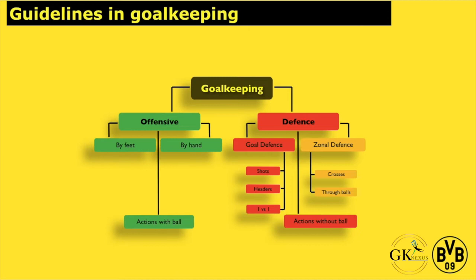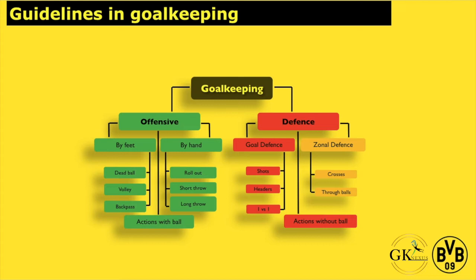In the offensive game, the goalkeeper has the ball. That means we talk about actions with the ball. These actions can be done by feet or by hand. Actions by feet are the dead ball, a volley, or dealing with a back pass. By hand is a rollout, a short throw, or a long throw, for example.